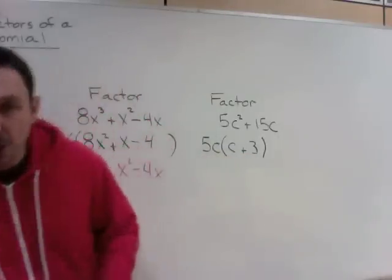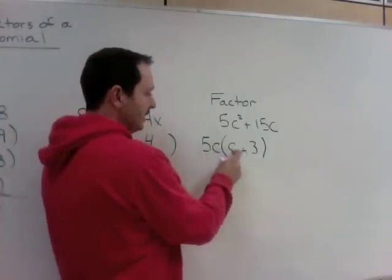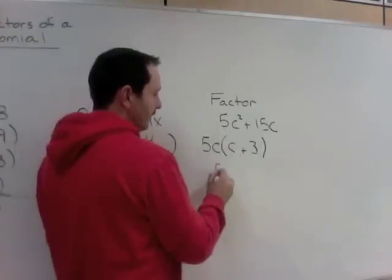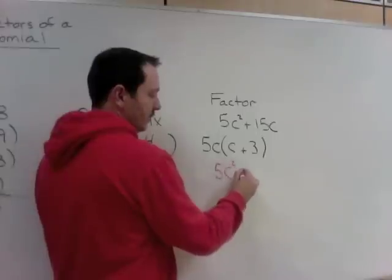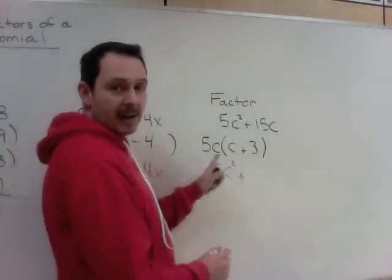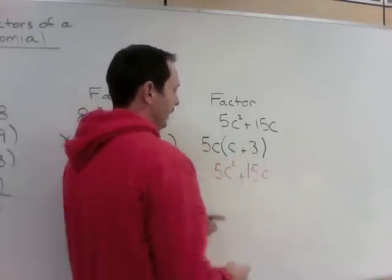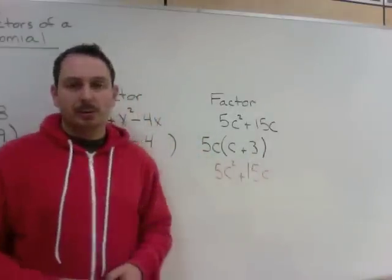And again, we can check this by expanding. 5c times c, 5 times 1 is 5, c times c, c squared. 5 times 3, 15, c times 1 is c. And you can see, we got back to where we started.